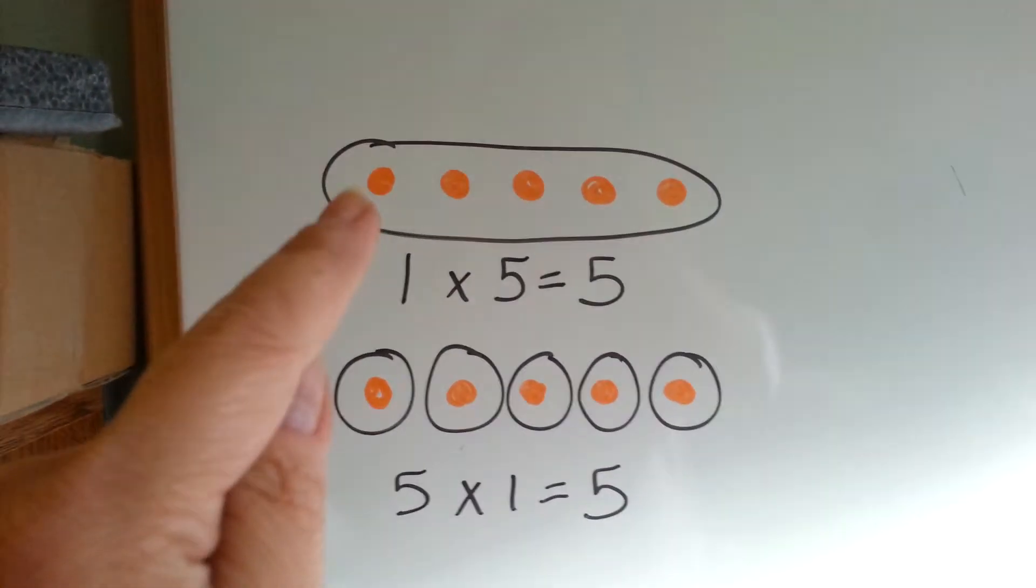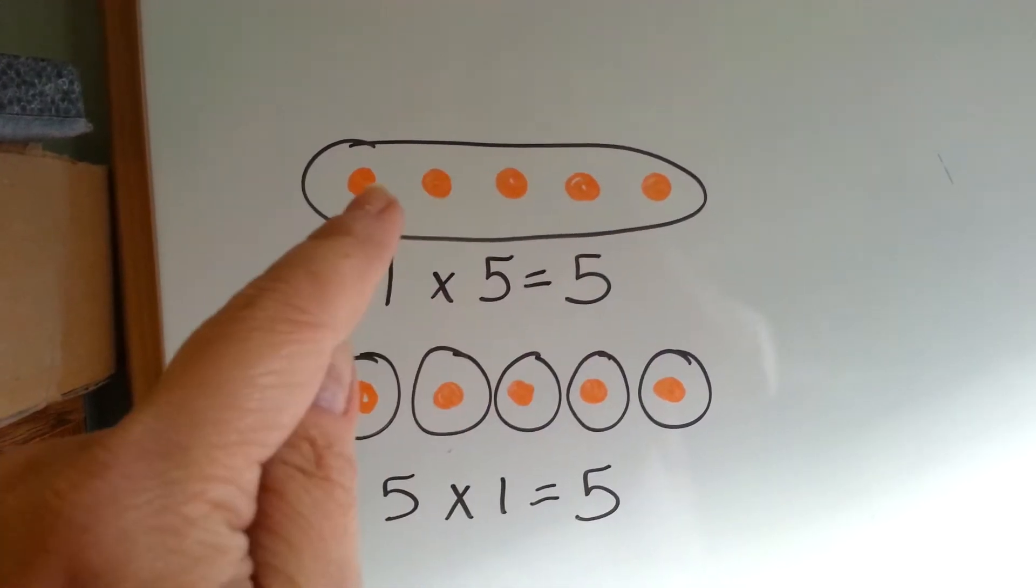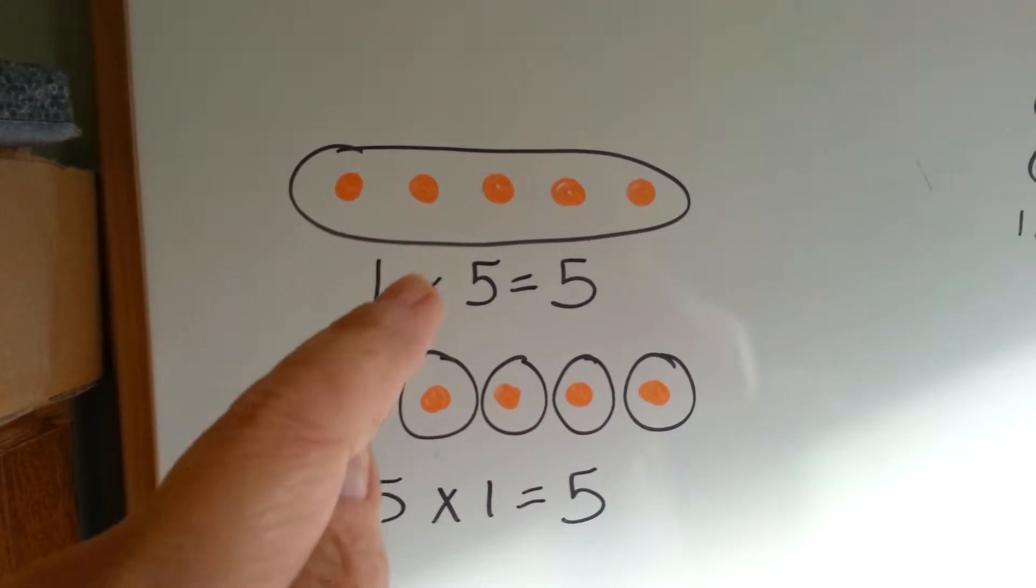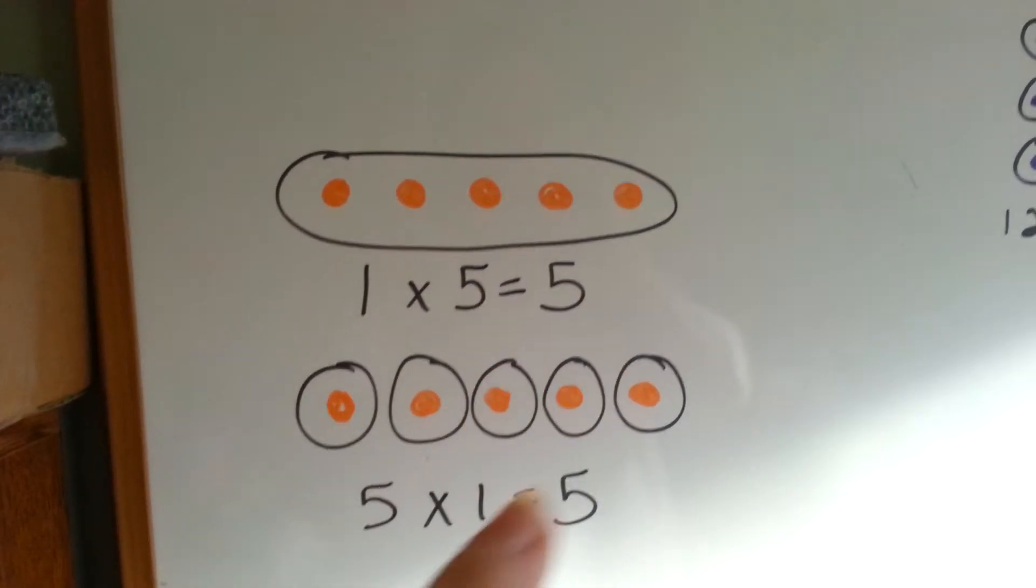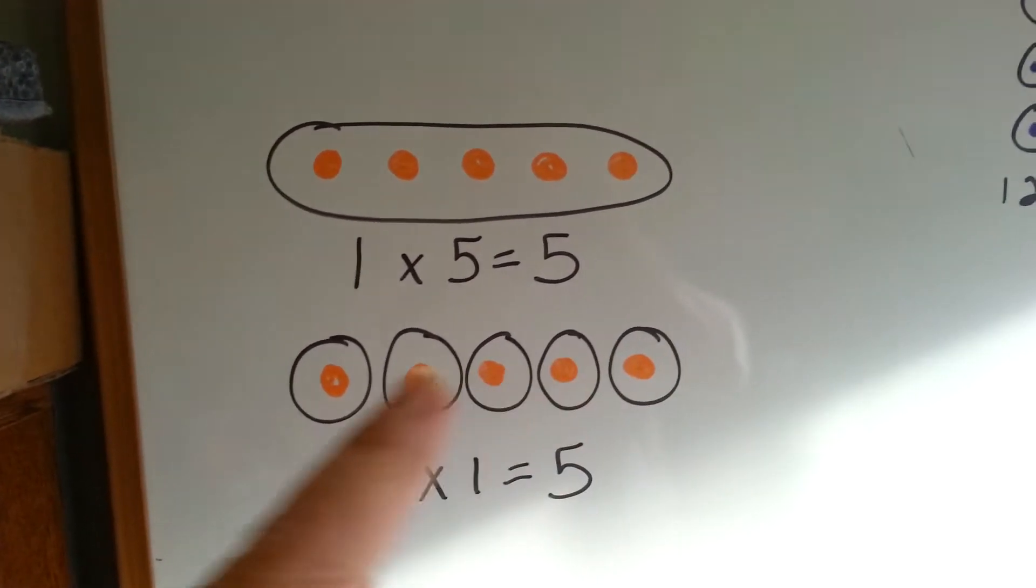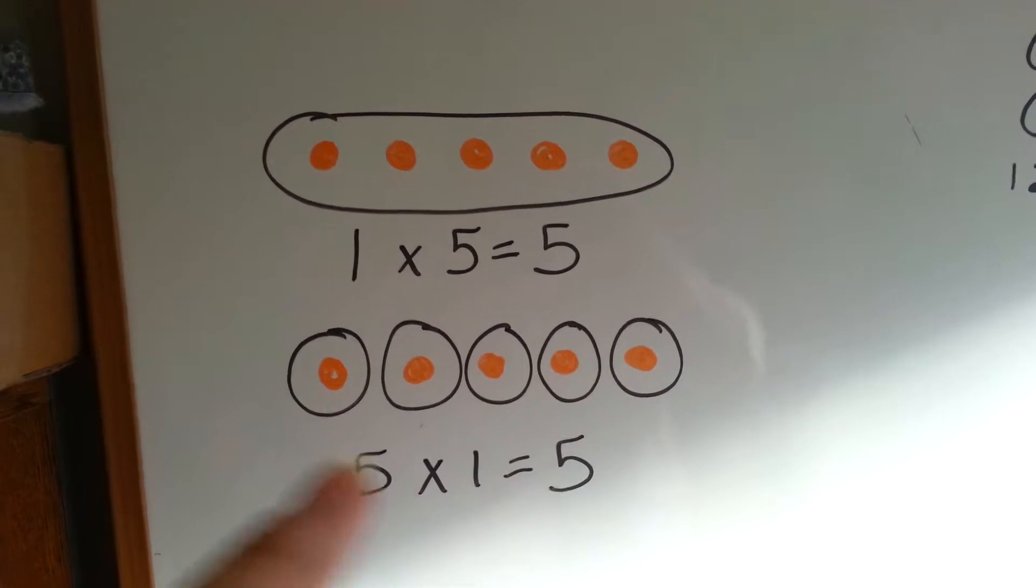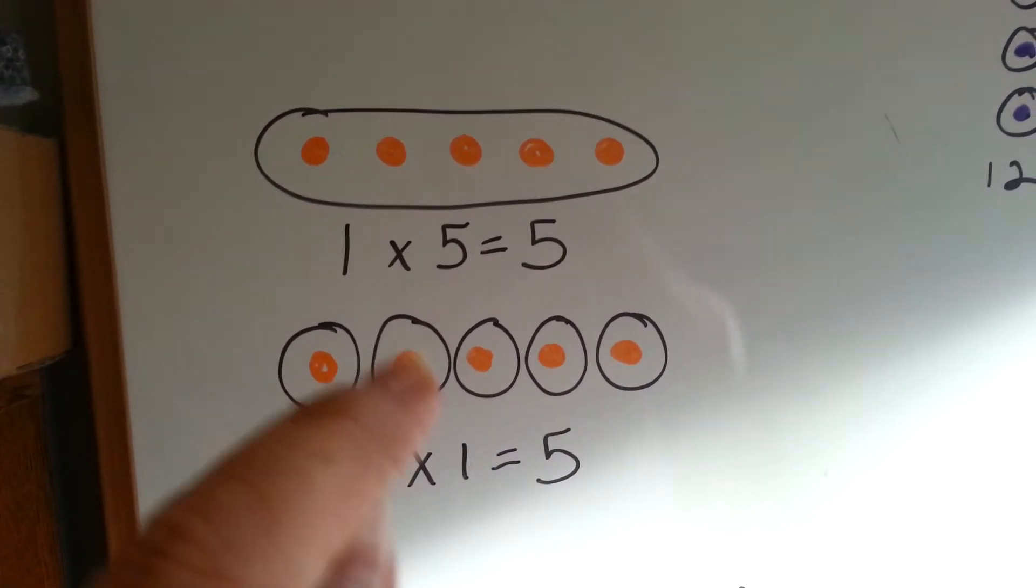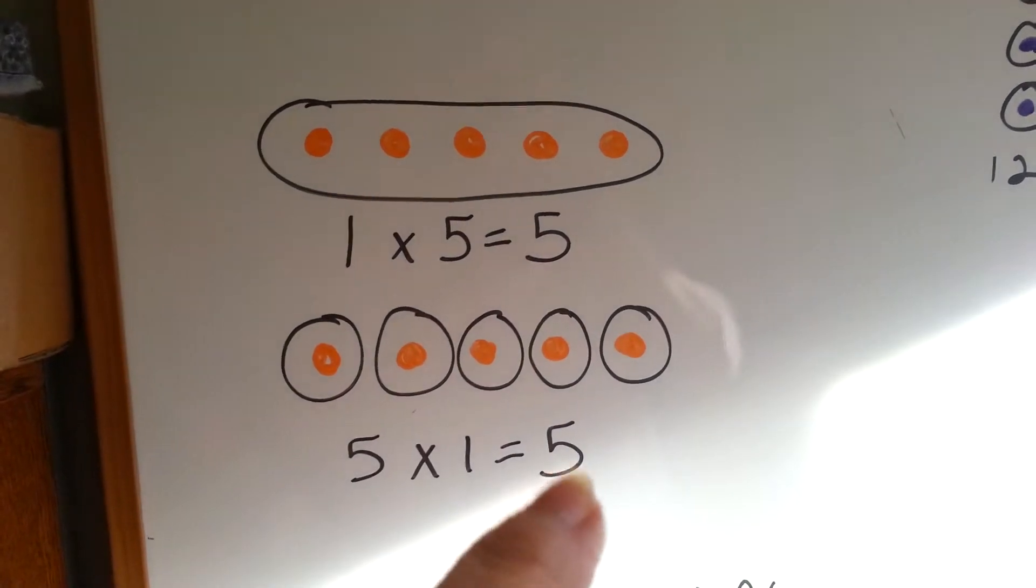Let's look at this one. We have five orange dots one time in a circle. One times five equals five. Now we have five orange dots in their own circles. So if you have one dot five times, one, two, three, four, five, it's still five.